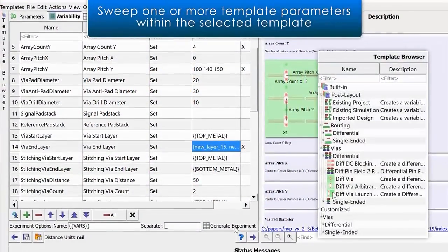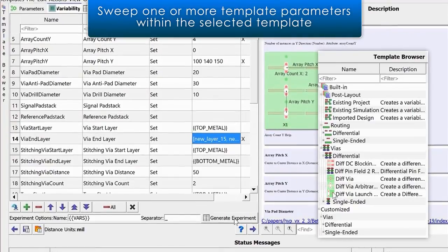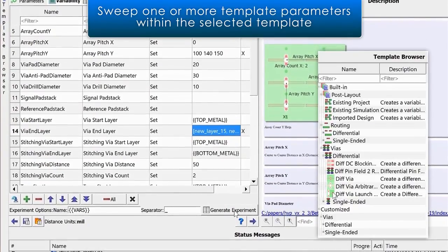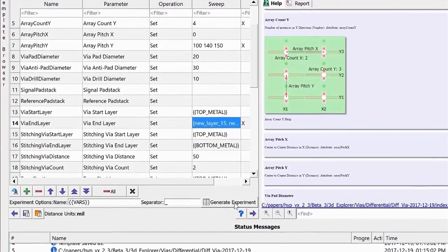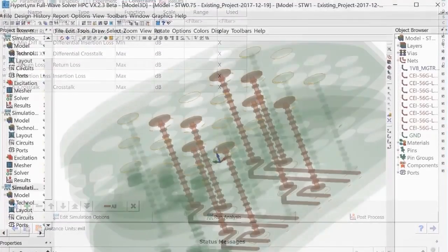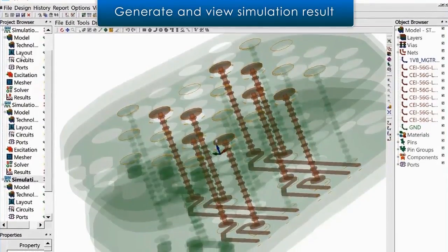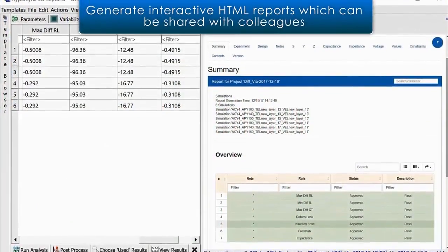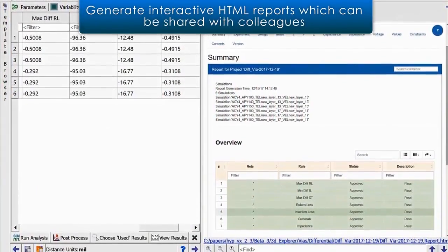Hyperlinks 3D Explorer users can select a 3D structure from available templates, sweep one or more template parameters within the selected template, specify constraints to evaluate the 3D structures such as maximum insertion loss, generate and view simulation results, and generate interactive HTML reports which can be shared with colleagues.